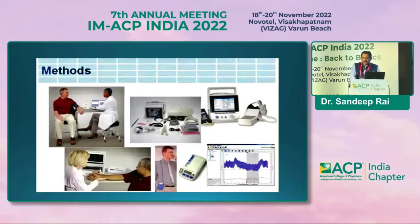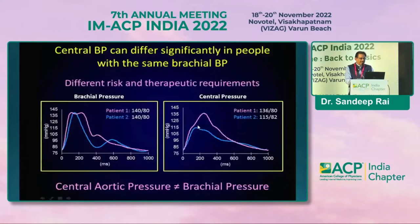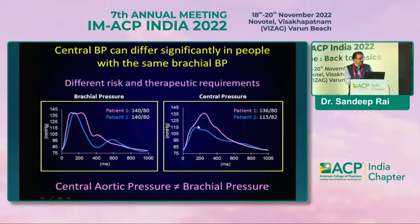There are various instruments available to measure carotid-femoral pulse wave velocity; I won't name the companies due to conflict of interest, but they can be used at the bedside. The clinical implication is that your brachial BP may not be the same as your central blood pressure. For example, two patients may both have brachial BP of 140/80, but one has a central BP of 136/80 and the other 115/80.